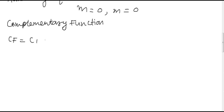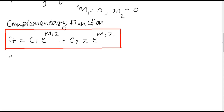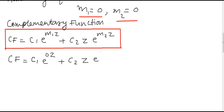Since the roots are real and identical, we use the complementary function formula: c₁e^(m₁z) + c₂z·e^(m₂z). Substituting m = 0, we get CF = c₁e⁰ + c₂z·e⁰ = c₁ + c₂z.